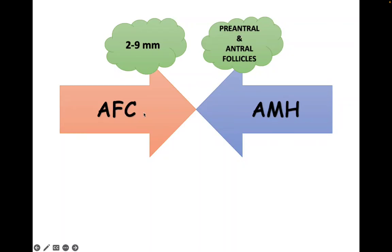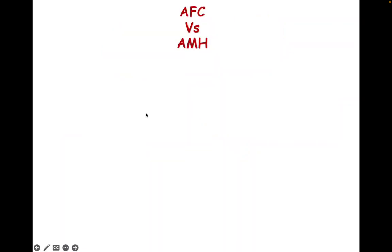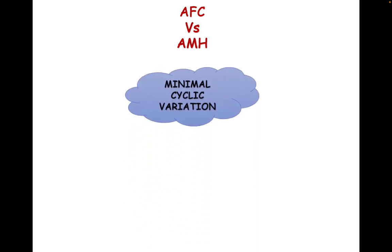But in AFC we include only antral follicles, not pre-antral follicles. Now there are some advantages of AMH over AFC. Firstly, AMH has very minimal cyclic variation, so you can take it during any phase of the menstrual cycle. But for AFC, we have to do the count only on day 2 or day 3, because after that the antral follicles start getting recruited and start becoming dominant.